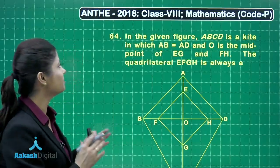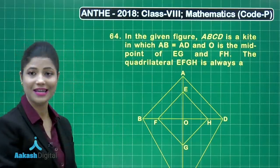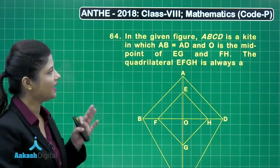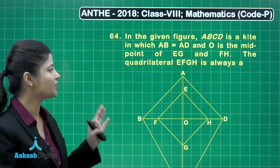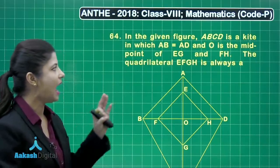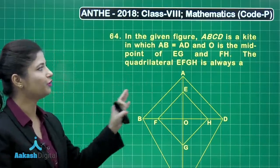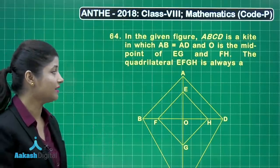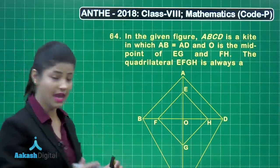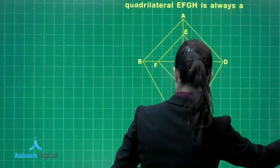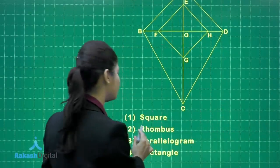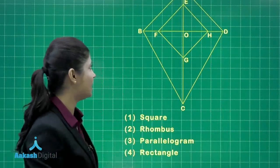Let's discuss question number 64. It states that in the given figure ABCD is a kite in which AB is equal to AD and O is the midpoint of EG and FH. The quadrilateral EFGH is always: square, rhombus, parallelogram, or rectangle.